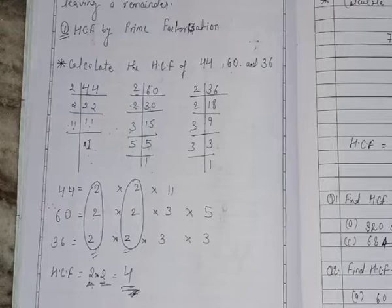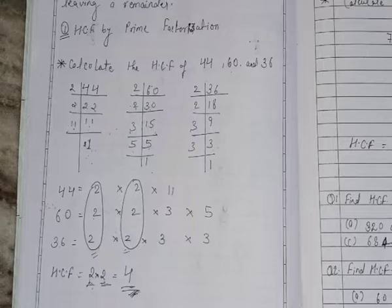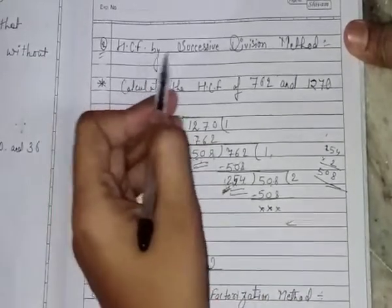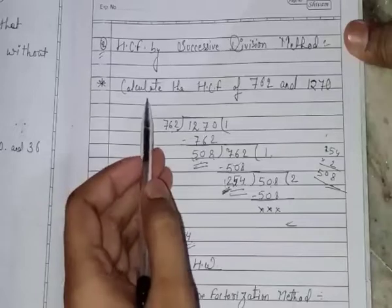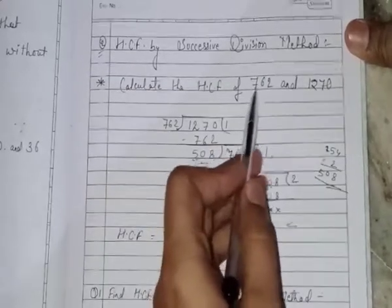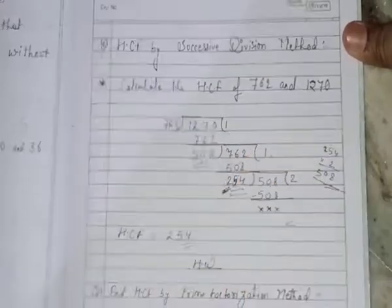We will study the second type of method to take out the HCF. Second method is HCF by successive division method. For example, calculate the HCF of 762 and 1270.